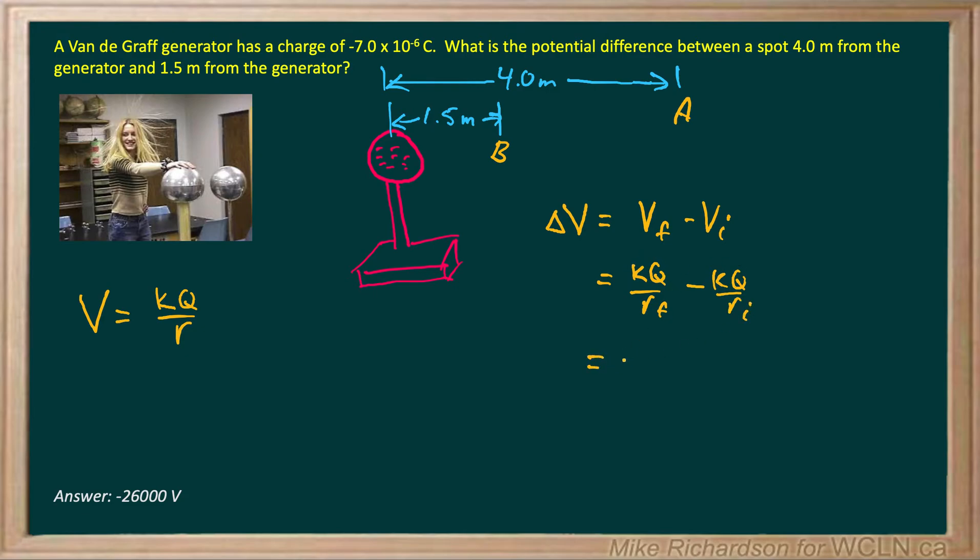Now I've got a KQ in both terms. So I like to factor that out. And I get 1 over R final minus 1 over R initial.